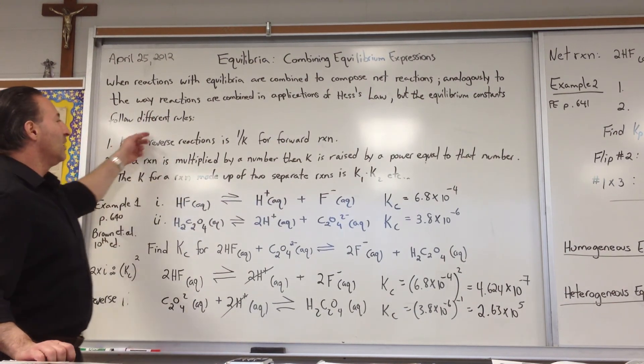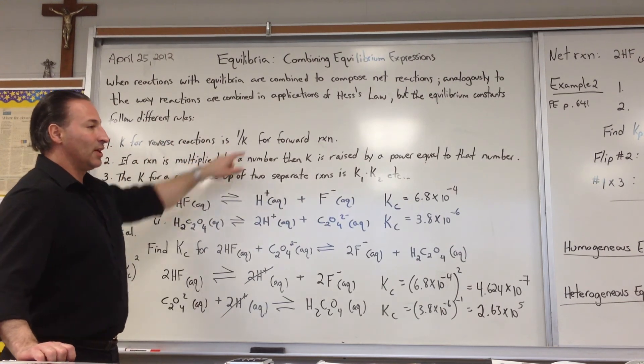So if you have a forward reaction with the value of K, the reaction written backwards, the value becomes 1 over K.